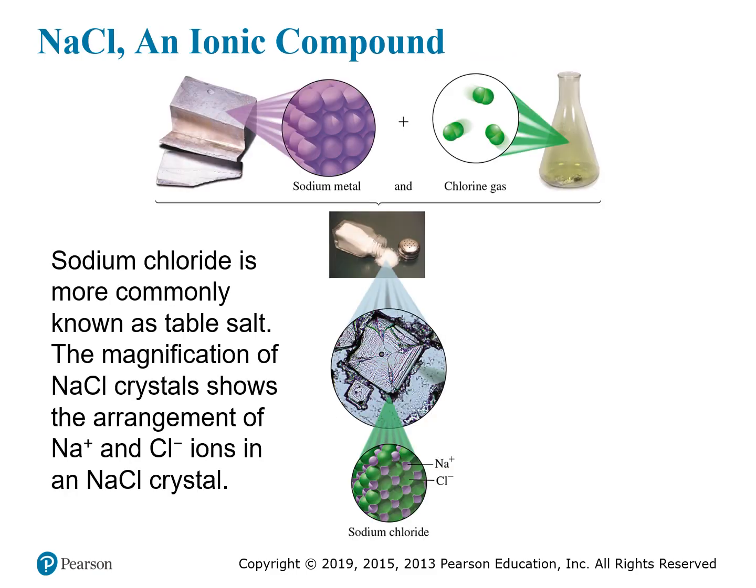Sodium chloride is probably the best-known ionic compound, more commonly known as table salt. Sodium chloride is formed from sodium ions — sodium atoms that have lost their electrons to become plus-one ions — and chloride ions, which are chlorine atoms that have gained an electron to become minus-one ions. When sodium and chlorine react together, they form a network of ions. This is a representation of the crystal structure of sodium chloride, where the sodium ions are the smaller purple spheres and the chloride ions are the larger green spheres — an extended network of interpenetrating ions.